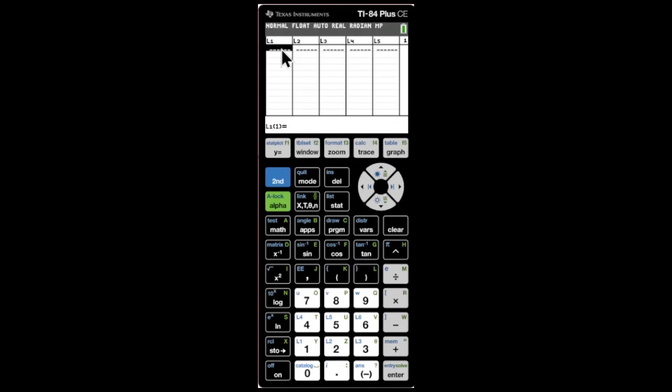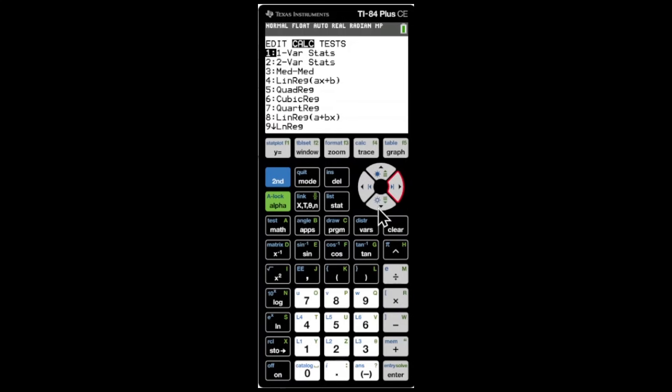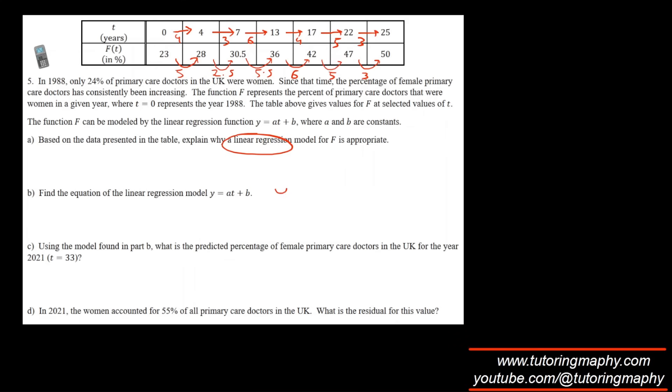Let's type in this data here. The first number is zero. Go to STAT, CALC, this is a linear regression, so go to option 4, enter, calculate, and enter. We are getting the linear model as y equals 0.8995x plus 26.8770.